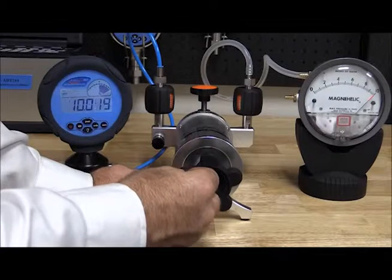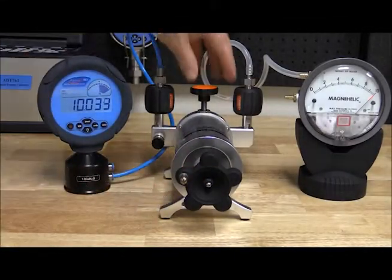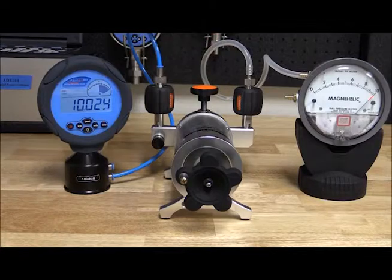The Additel 901 pump uses an isothermal bellow chamber, which is designed to reduce the impact of environmental temperature changes.